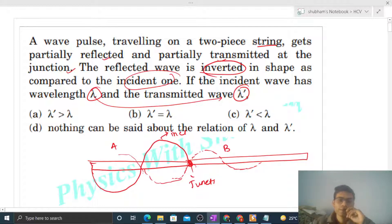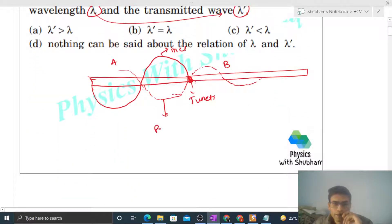It means jo reflected wave hai na, yeh jo reflected wave hai, ismein phase difference aa jayega pi ka, right? And yeh kya hai, yeh transmitted wave hai. Now you can see, if the reflected wave is inverted, it means density of string B will be higher than the density of string A.